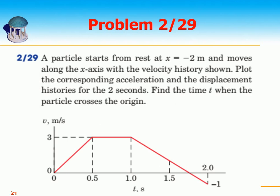The next problem shows how to get relationships from a graphical representation when given velocity, displacement, or acceleration. This is problem 2-29 from the 7th edition of Meriam. A particle starts from rest at x equals minus 2 meters and moves along the x-axis with the velocity history shown. Plot the corresponding acceleration and displacement histories for 0 to 2 seconds, and find the time t when the particle crosses the origin.